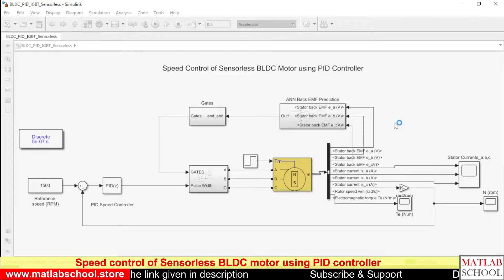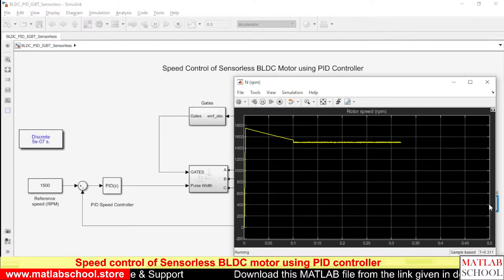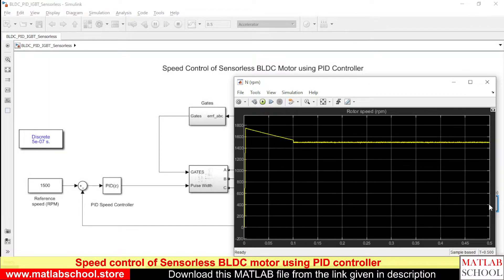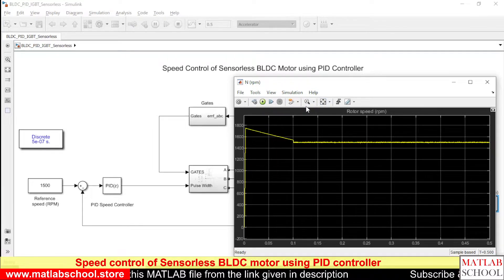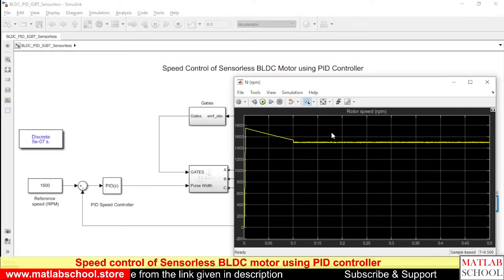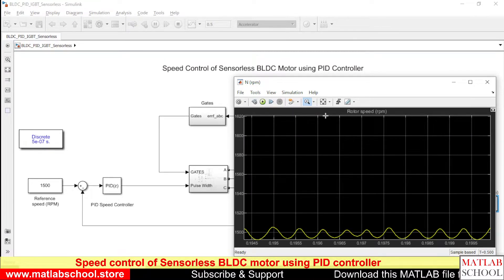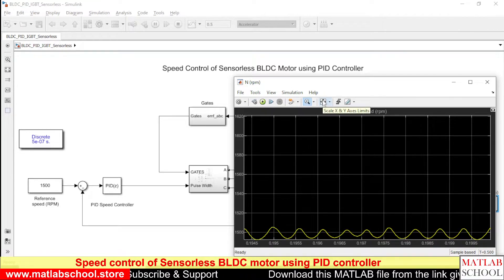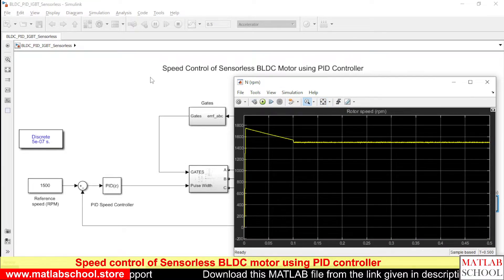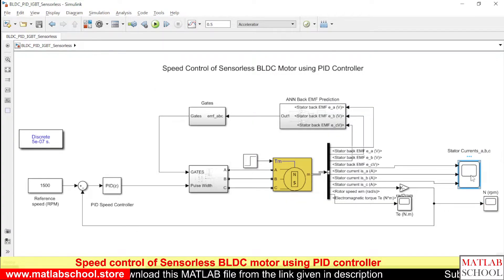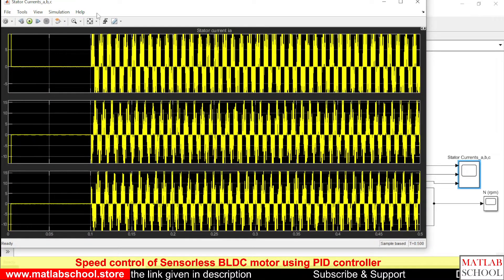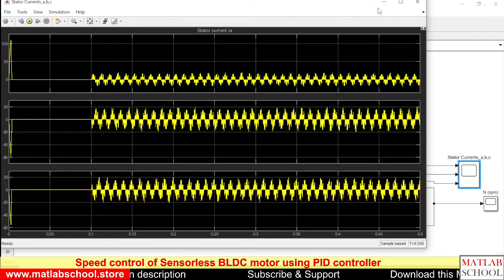The simulation is running. Now we can see the speed, settling at 1500 RPM. And also you can see the stator currents. Yes, these are the stator currents.